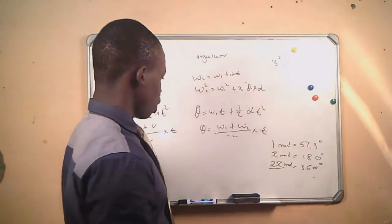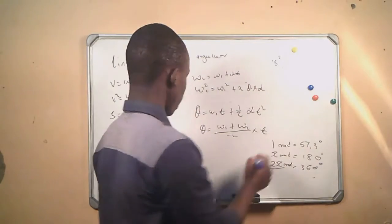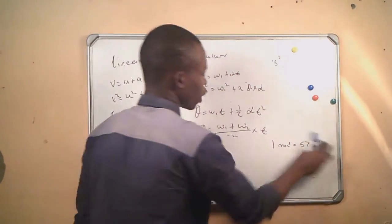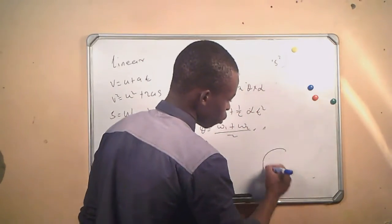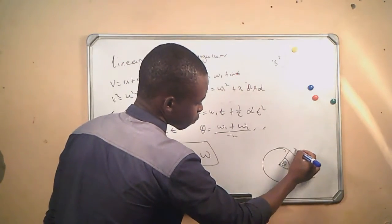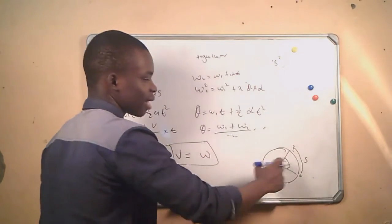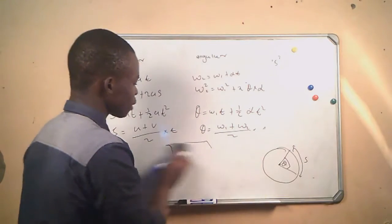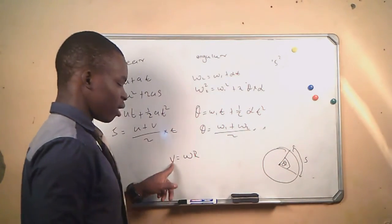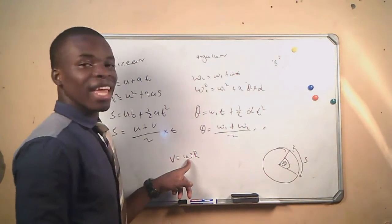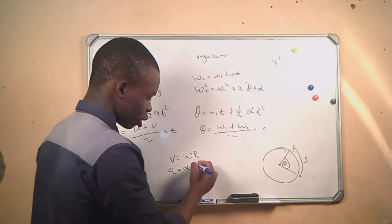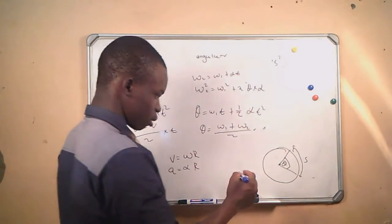We also have formulas that connect linear and angular quantities, since there is a relationship between the two. From the triangle, we can see that angular displacement and linear displacement are related. The formulas are: v = ωr, where v is linear velocity, ω is angular velocity, and r is radius; and a = αr, where a is linear acceleration and α is angular acceleration.